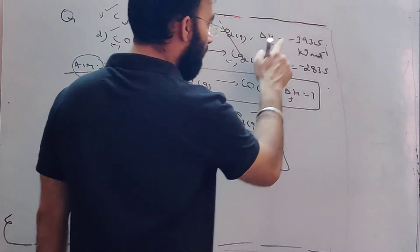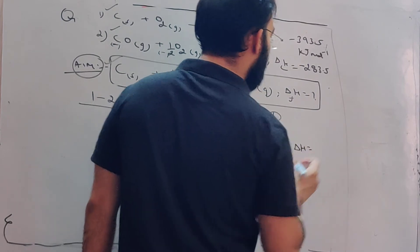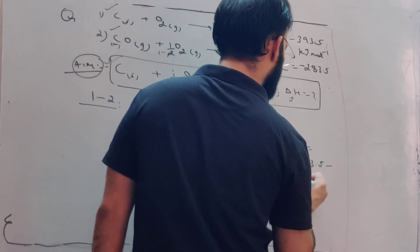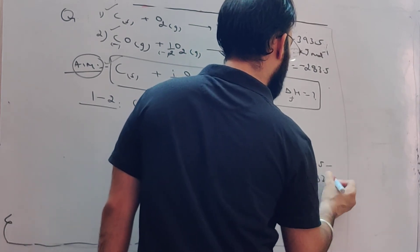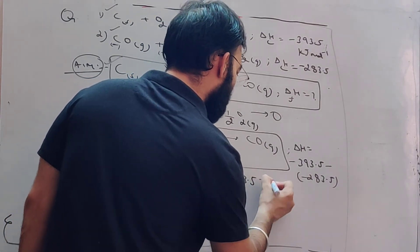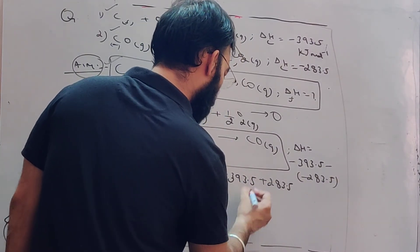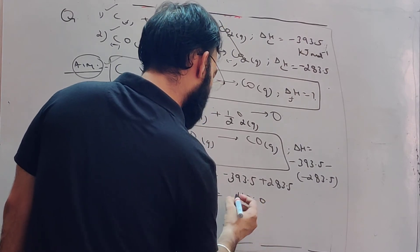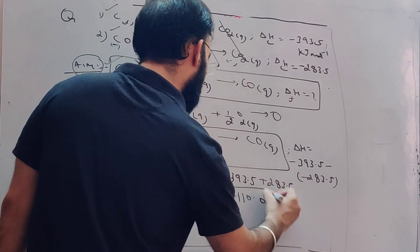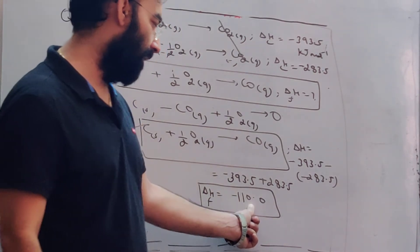We have reached this equation by subtracting the two equations. So the delta H values will also get subtracted: minus 393.5 minus minus 283.5. So this will come out to be minus 393.5 plus 283.5, which is minus 110. So enthalpy of formation of carbon monoxide should be minus 110.